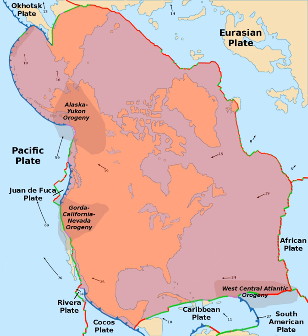The westerly boundary is the Queen Charlotte Fault running offshore along the coast of Alaska and the Cascadia subduction zone to the north, the San Andreas Fault through California, the East Pacific Rise in the Gulf of California, and the Middle America Trench to the south.